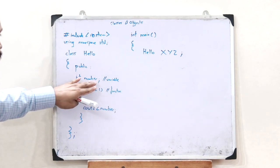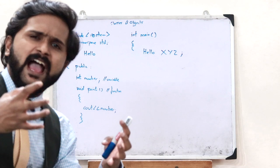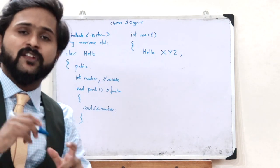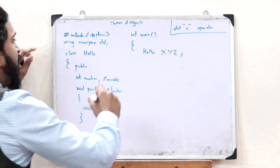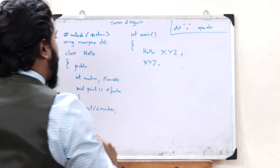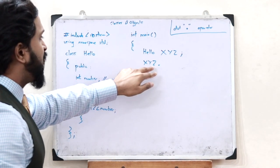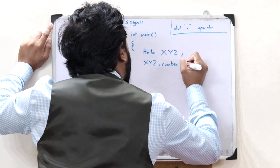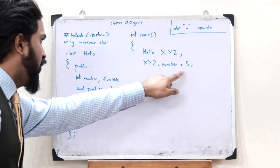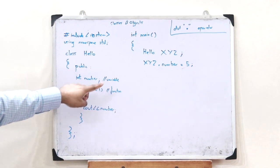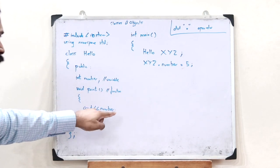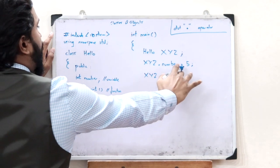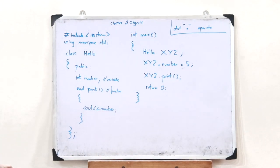To access the data member and member function of this object, we use the dot operator. We write 'xyz.number = 5' — this stores the value 5 in the variable 'number' of object xyz. To display that number, we write 'xyz.print', which calls the print function and outputs the number using 'cout << number'.